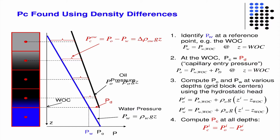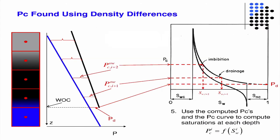With those, we can compute the capillary pressure at all depths, where the i-locations are the locations of each grid block center — that's what i means. The steps are exactly identical to what they were on the first slide. Once we know the capillary pressures from the density differences, we can go over to the drainage portion of the capillary pressure curve and read off the saturations. This is how you get the saturation — it's sort of automagically done for you in CMG, but these are the steps behind it.